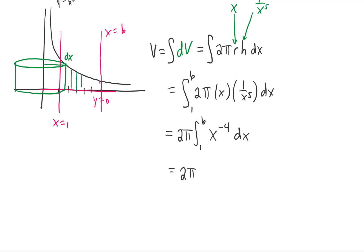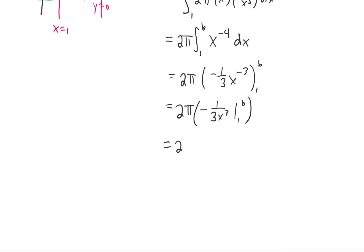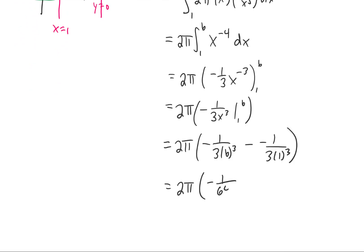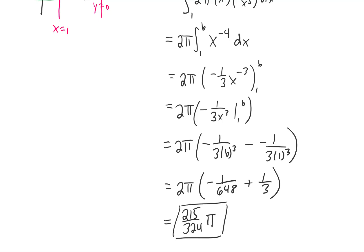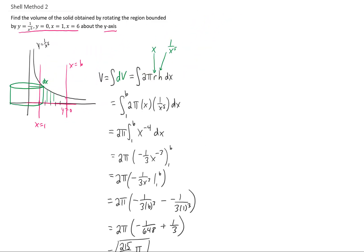When we integrate x to the negative 4, we add 1 to the power and divide by that power. We can write this more cleanly, and plugging in our upper and lower limits of integration we get negative 1 over 648 plus 1 third. Multiplying the whole thing by 2π, we get 215 over 324 times π as our final volume in units cubed. And that does it for that problem — I'll see you in the next one.